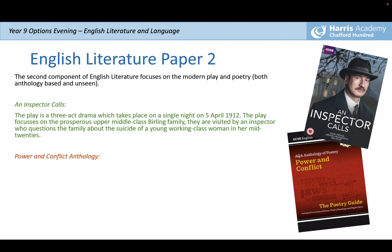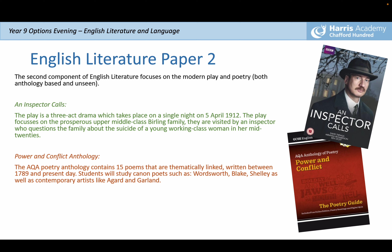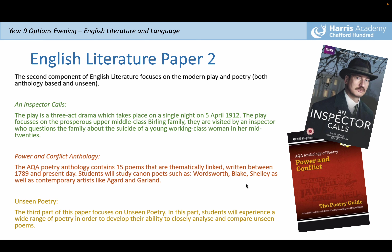The Power and Conflict anthology is the next part of the course. The AQA anthology contains 15 poems, all thematically linked, written between 1789 and the present day. Students will study canonical poets such as Wordsworth, Blake, and Shelley, as well as contemporary artists like Agard and Garland. Finally, there is a third element called unseen poetry, where students experience a wide range of poems to develop their ability to closely analyse and compare unseen poems.